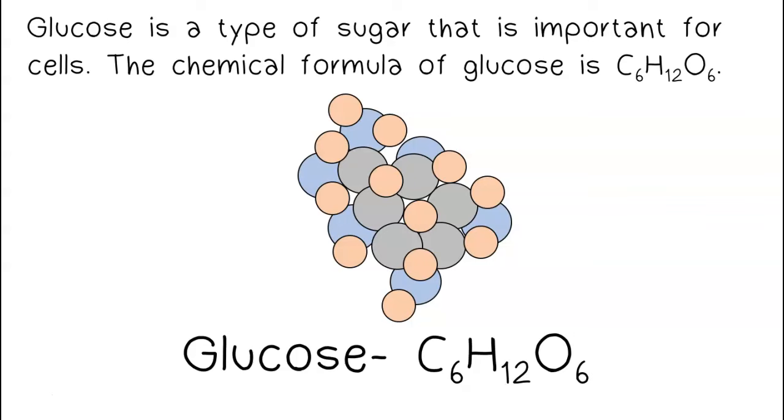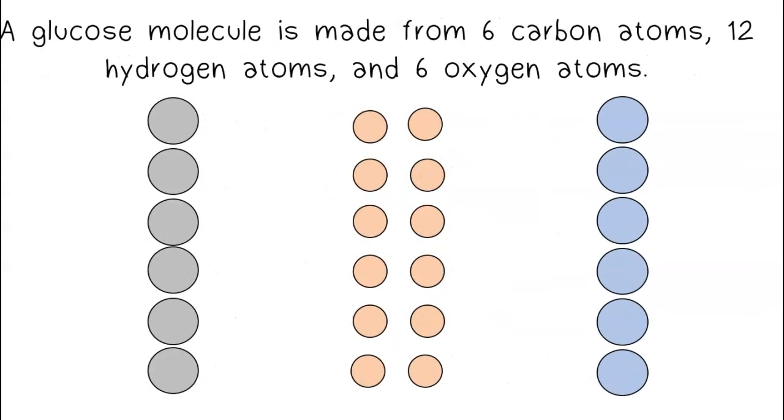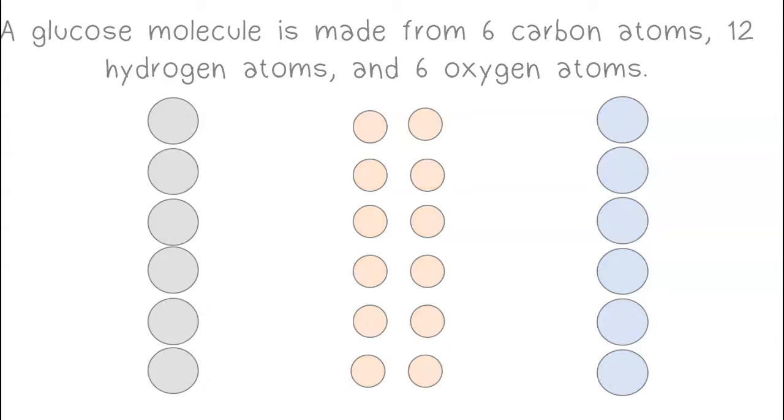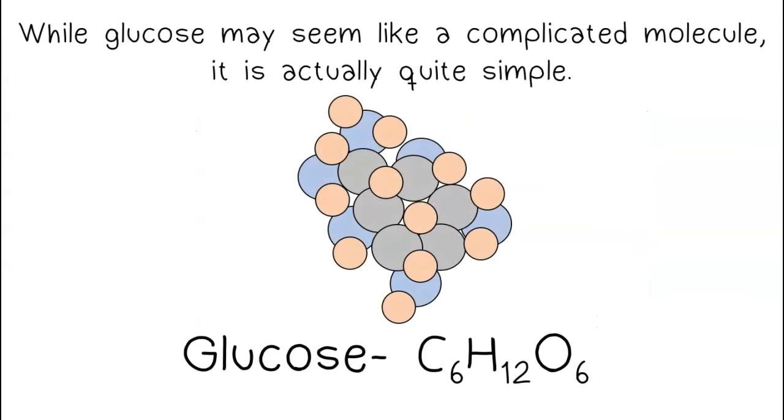Glucose is a type of sugar that is important for cells. The chemical formula for glucose is C6H12O6. A glucose molecule is made from six carbon atoms, 12 hydrogen atoms, and six oxygen atoms.